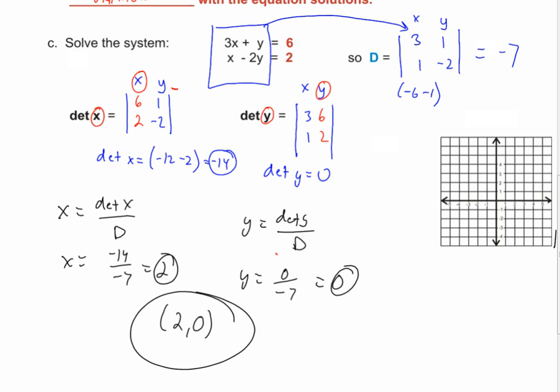What would have happened if the system determinant D were zero? You'd be dividing by zero, which is undefined — so you cannot do that. If D equals zero, the system is either inconsistent or consistent and dependent.